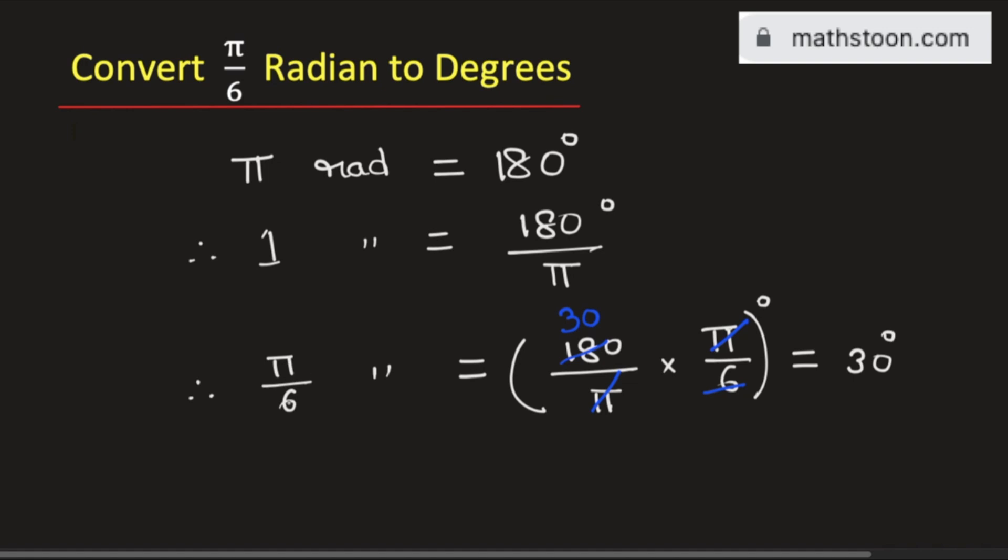So finally, we get π/6 radians equals 30 degrees. And this is our final answer. Thank you for watching.